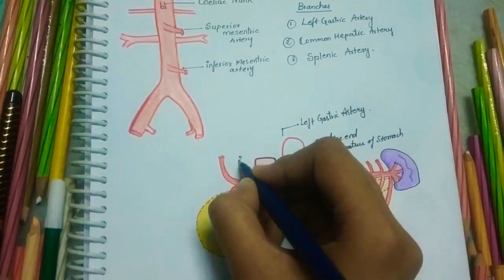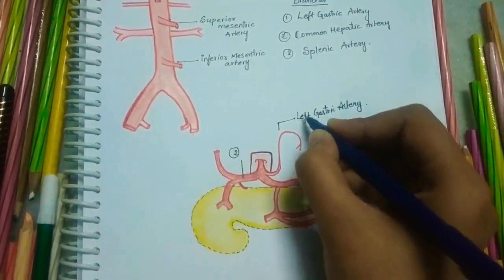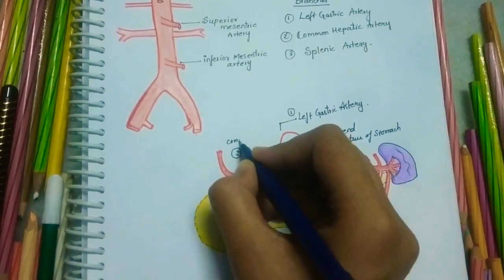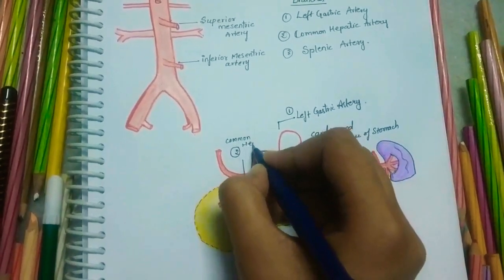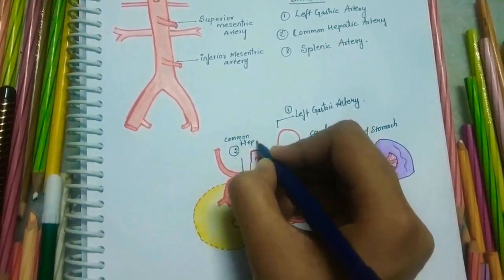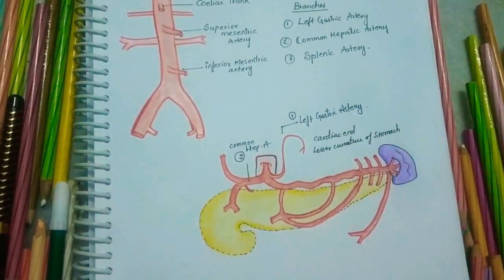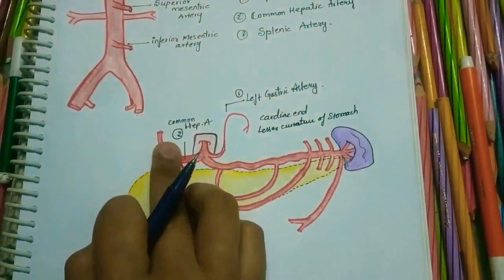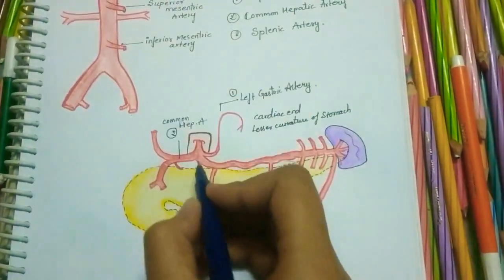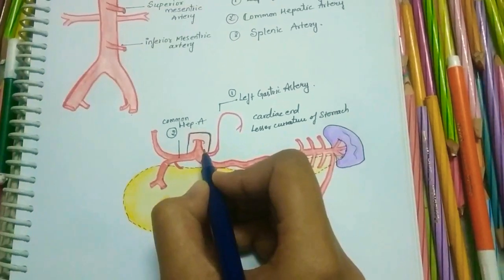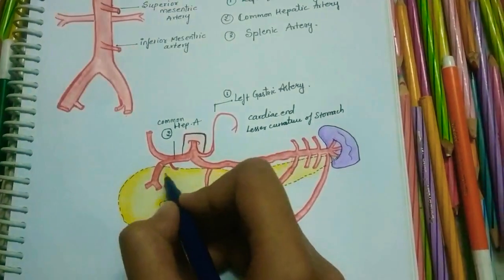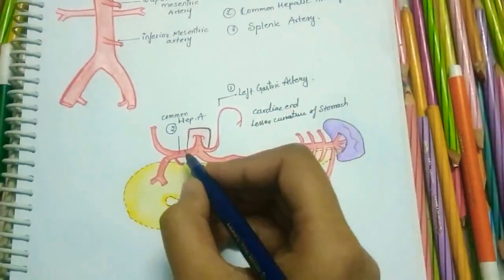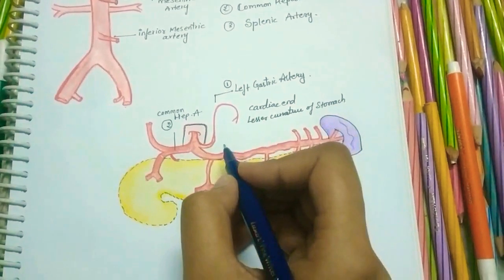Coming to the common hepatic artery — it is larger than the left gastric artery. It runs downwards and towards the right side to reach the upper surface of the first part of the duodenum, and then gives rise to three branches.